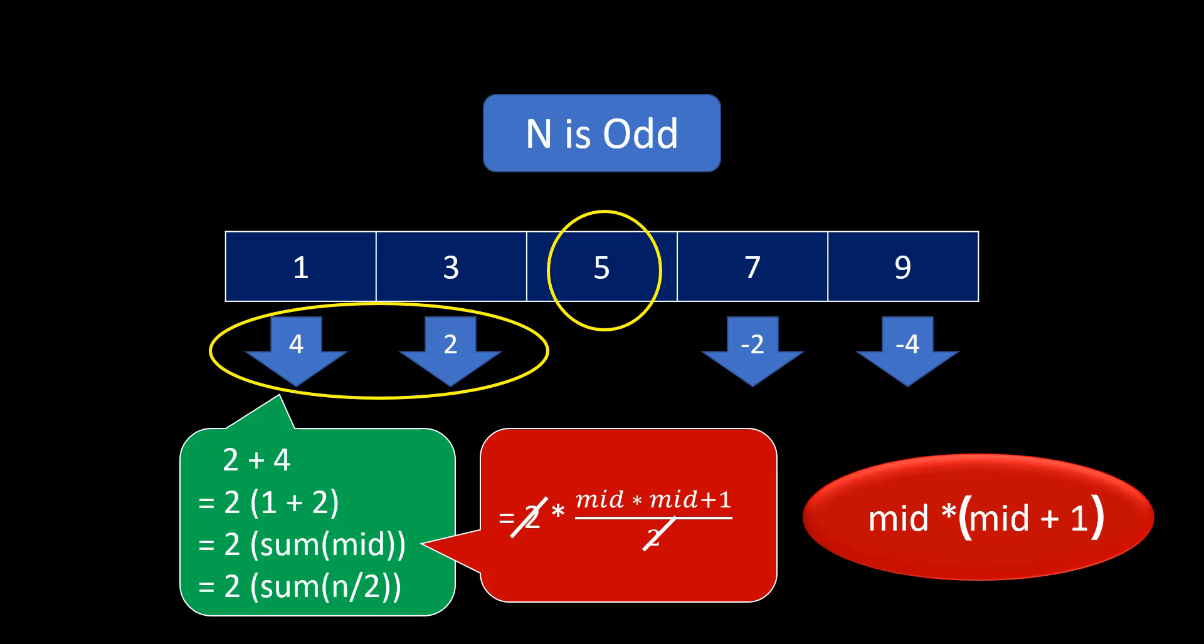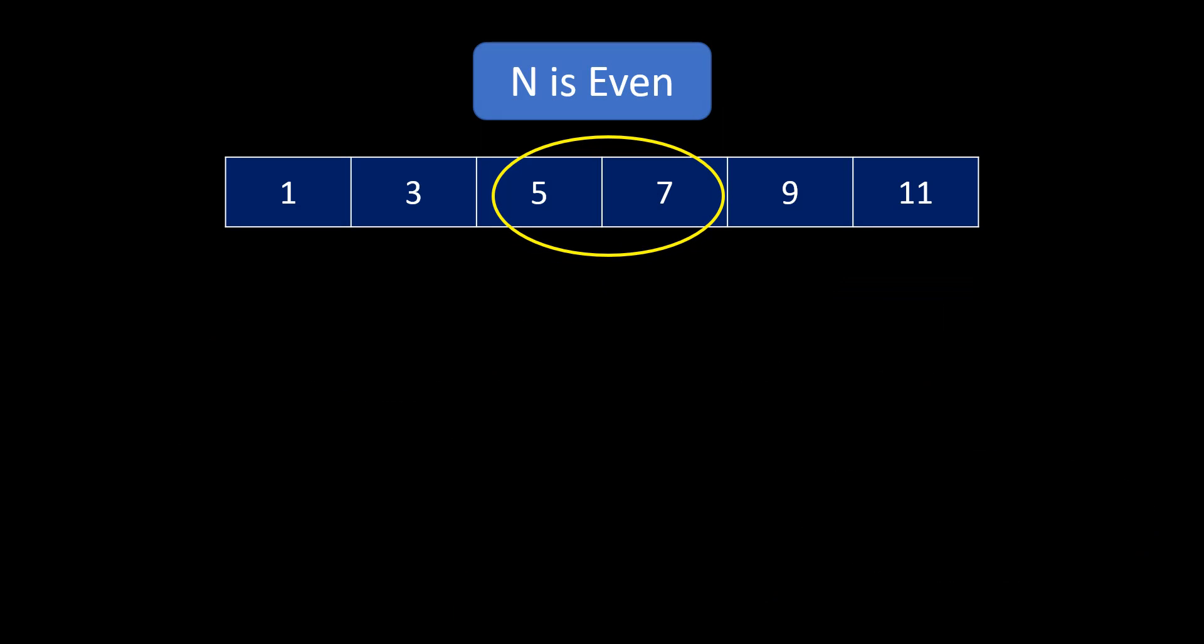Now, let's go to even case. When my n is even, I have these two members which are lying in my mid and so my mid would be nothing but the mid of these two values.